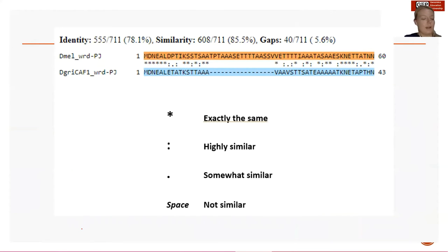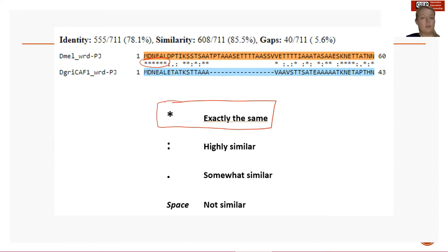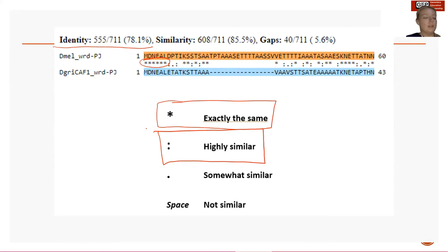Now that we know how to read an alignment we can move on to the actual analysis. Between each of our amino acid sequences we will see a symbol that gives us information on how similar each amino acid is between the two species. We are currently zoomed into the first line of our first exon. An asterisk appears between our first six alignments — an asterisk tells us that these amino acids are exactly the same, they are identical, so they will contribute to our identity score. A colon means that the amino acids are different in structure.